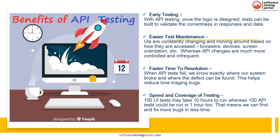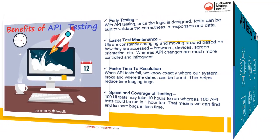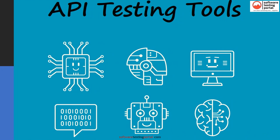The benefits of API testing are: early testing, easier test maintenance, faster time to resolution, and speed and coverage of testing. Additional benefits include being language independent, easy integration with GUI, cost effective, and better coverage. Having the right process, tool, and solution for API testing is critical for success. Popular tools in the API testing space include Postman, SoapUI, REST Assured, Swagger, JMeter, and Katalon Studio. We will see a list of API testing tools in the next video.